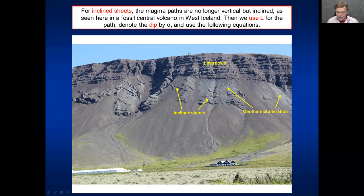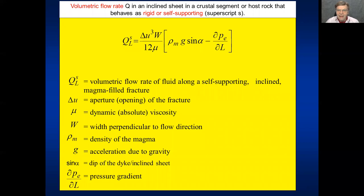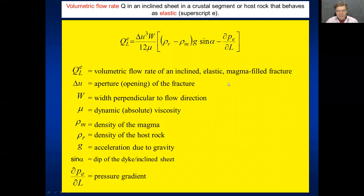And then we get the same equations as before, except that we have sine, we have sine of alpha here. Everything else is the same. This is for a self-supporting or rigid model. Self-supporting or rigid model. So there's no buoyancy here. Self-supporting or rigid model. Everything here has already been discussed and defined. And this one, which is more realistic, is for an elastic model, namely for a model where buoyancy is taken into account. Everything has been discussed here before. The superscript e is used here for elastic. And then we have the equation here. Sine alpha is sinus of the dip of the inclined sheet.